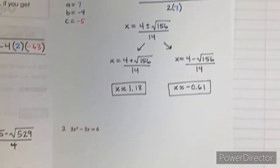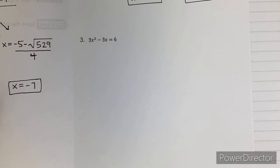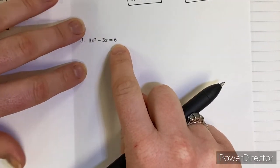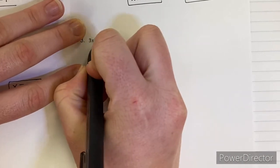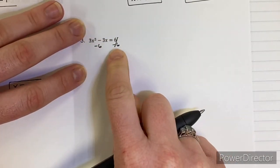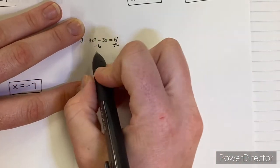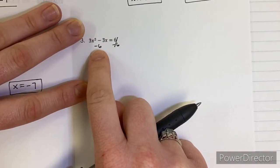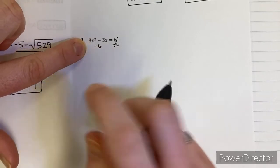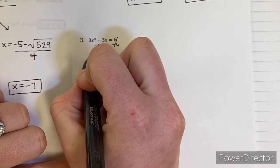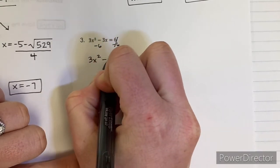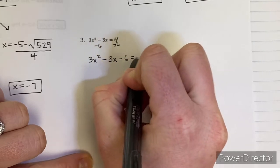I wanted to do number three together with you, so I didn't actually do that one. The first thing I notice when I look at number three is that the equation itself is not equal to zero — that's something we have to fix immediately. To fix it, you do the inverse operation: it's a positive six, so to make it go away, I subtract six. Now this side is going to be zero, and that minus six becomes my C value. So I'll have 3x² minus 3x minus 6 equals zero, and now it looks normal and I can move forward.